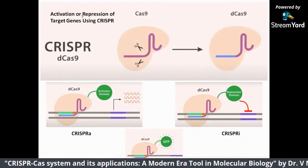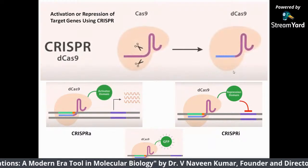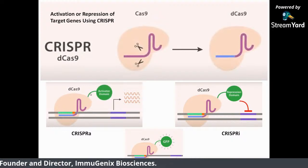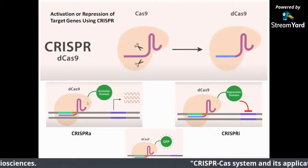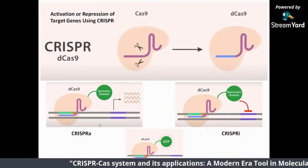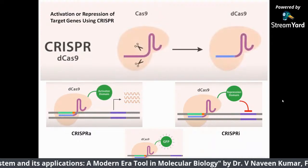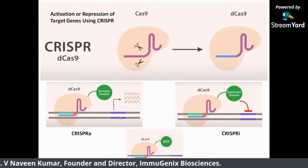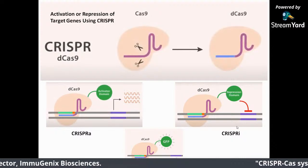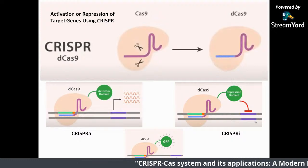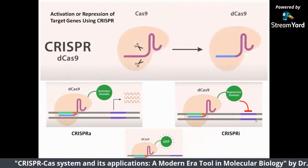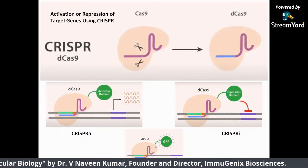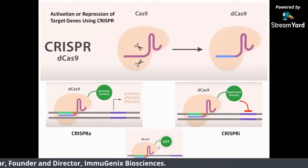There are many applications of dead Cas enzymes: you can remove both cutting domains so it becomes a dead Cas enzyme that still goes and binds. By coupling it with an activation domain, you can make a CRISPRa — CRISPR activator — that binds to the promoter region and activates gene expression. Similarly, by coupling it with a repressor domain — CRISPRi — you can block gene expression. This way you can study what happens when a gene is expressed more or less. It can also be coupled to green fluorescent protein to localize a specific gene in a chromosome.